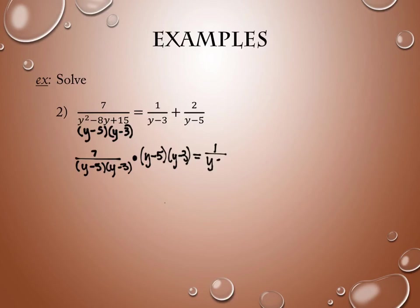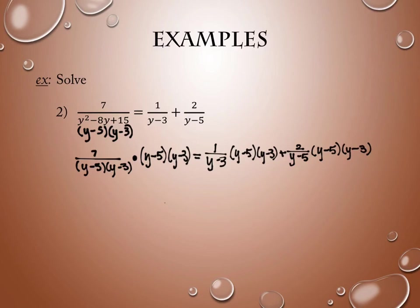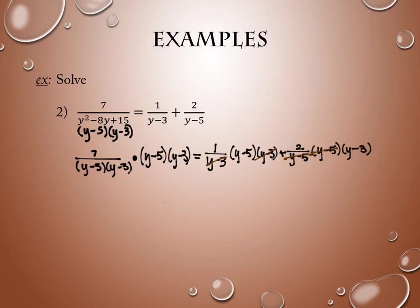So I have 1 over (y minus 3) multiplied by (y minus 5)(y minus 3), and 2 over (y minus 5) multiplied by (y minus 5)(y minus 3). The reason we did that is because in every situation the denominator will cancel out. On the right-hand side, the y minus 5s cancel out. In the middle, the y minus 3s cancel. And on the left-hand side, the entire (y minus 5)(y minus 3) denominator reduces.